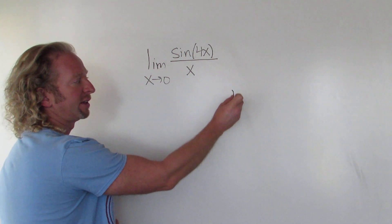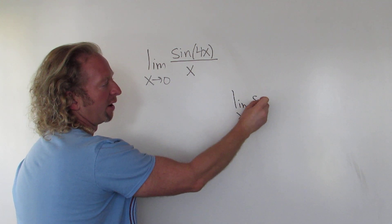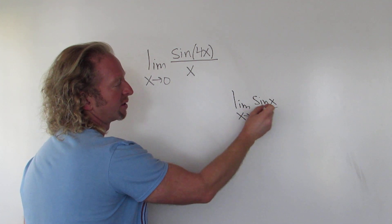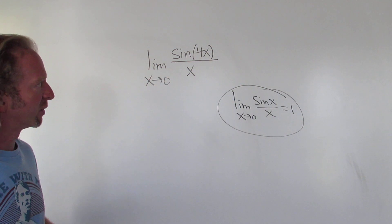So recall that the limit as x approaches 0 of sin x over x, that is equal to 1. So we're going to use this limit to figure out this one.